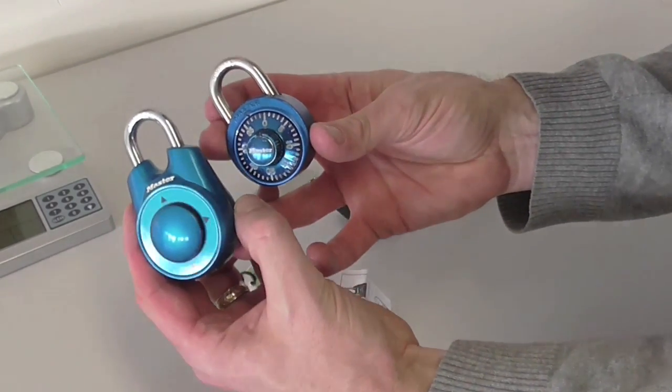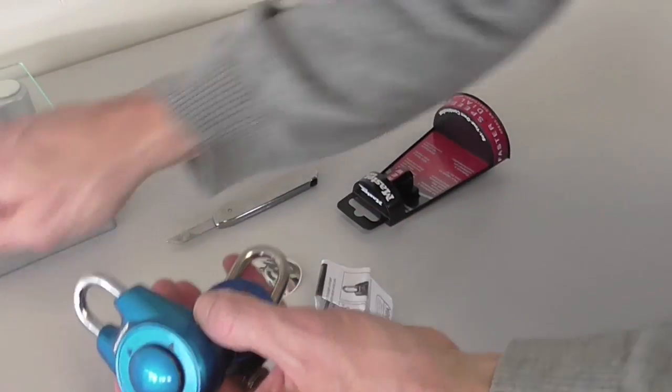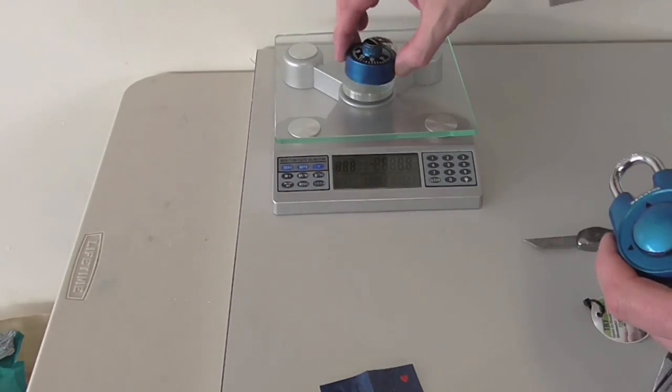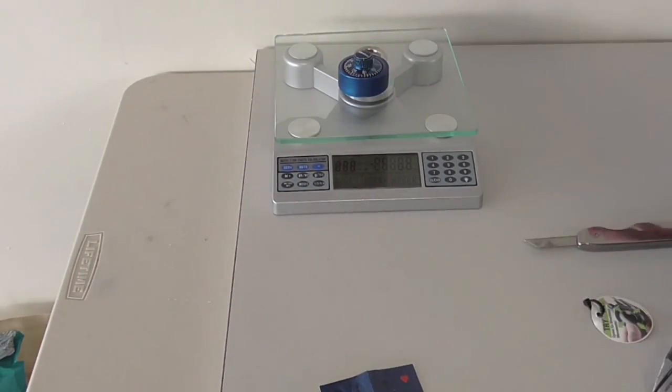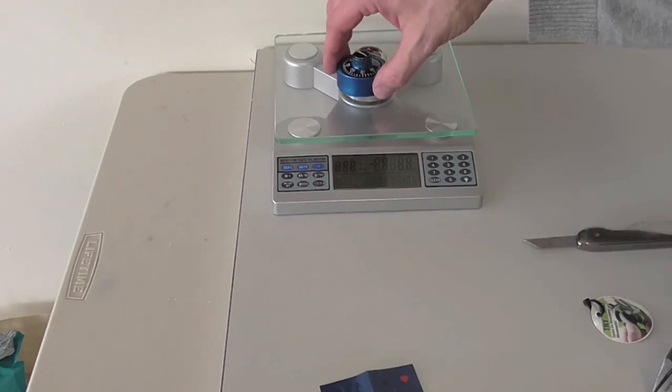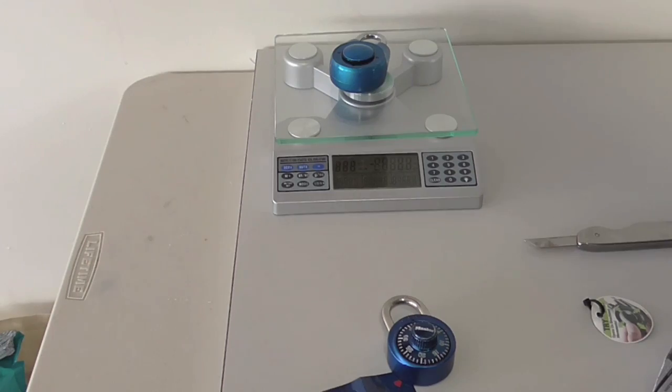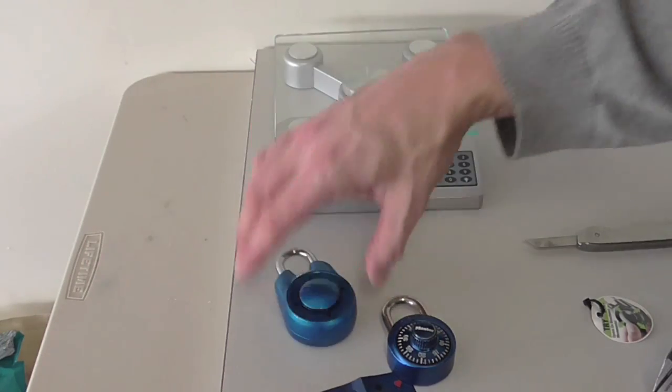Here are the two locks side by side. I am going to put them on the scale here. So the first one, the old traditional one, 4.9 ounces. The new one is probably a little heavier. It's a little bigger overall. 5.1. Pretty darn close.